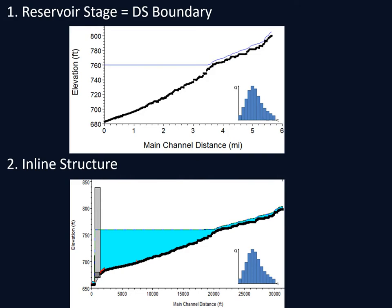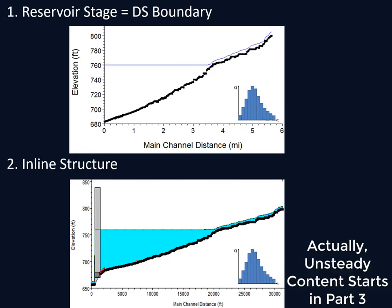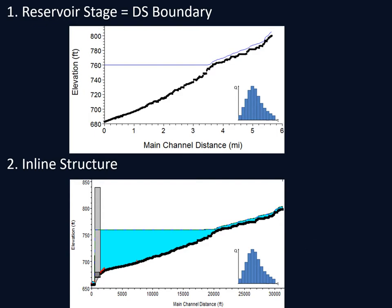The problem is that quasi-unsteady does not conserve water volume. Generally in a riverine environment, you're more interested in conserving sediment volume than water volume, and the quasi-unsteady approximation is fine. But that simplification becomes more problematic in a reservoir. In the next video, we'll talk about how to use unsteady flow to simulate sediment transport in a reservoir. But if you're going to use quasi-unsteady flow, because it is in fact still more stable, you can do that — you just can't route flow through your reservoir.